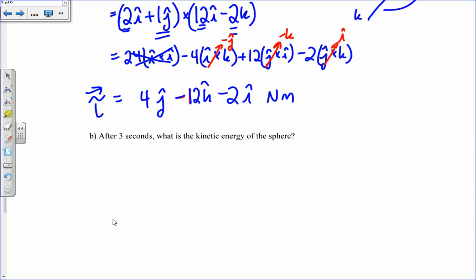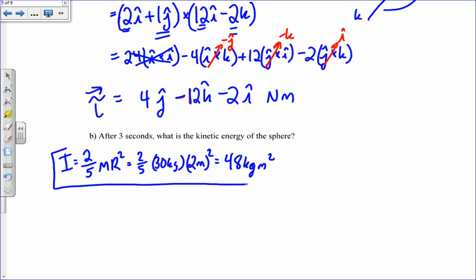Now, after 3 seconds, we want to know the kinetic energy of the sphere. A couple things we need to do here. First, we need to find the moment of inertia for this sphere. It's 2 fifths mr squared. It's 2 fifths times the mass, which is 30 kilograms times the radius squared, 2 meters squared. And that was 48 kilogram meters squared. Each of these was worth three points.